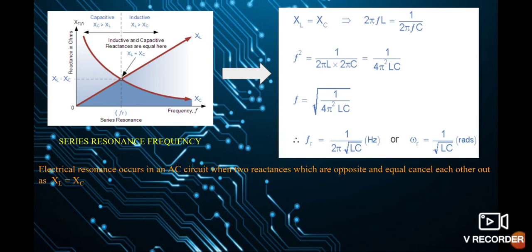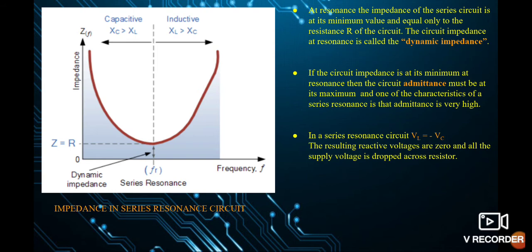Next is the impedance graph for the series resonance circuit. First, let us get acquainted with the definitions of dynamic impedance and admittance. At resonance, the impedance of the series circuit is at its minimum value, equal only to the resistance R — this is called the dynamic impedance. Since circuit impedance is at its minimum at resonance, the circuit admittance must be at its maximum. One characteristic of a series resonance circuit is that admittance is very high, VL equals minus VC, so the resulting reactive voltages are zero and all the supply voltage is dropped across the resistor.